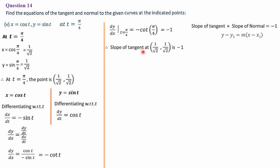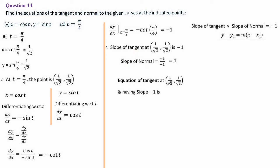The slope of the tangent at (1/√2, 1/√2) is −1. Now the point and slope are ready, so we can calculate the slope of the normal. Slope of the normal = −1 ÷ slope of tangent = −1 ÷ (−1) = 1. So both slopes are obtained. Let's find the equations.